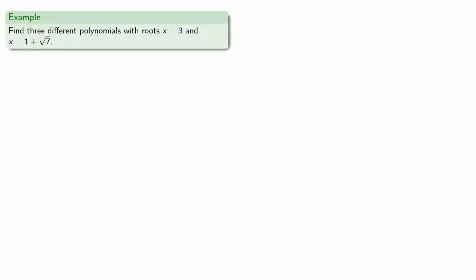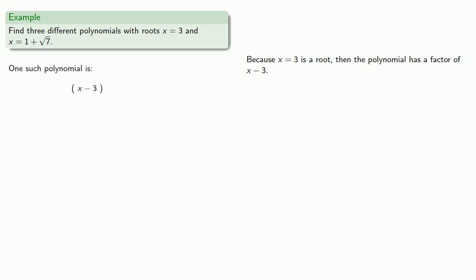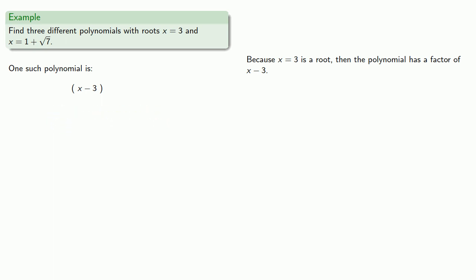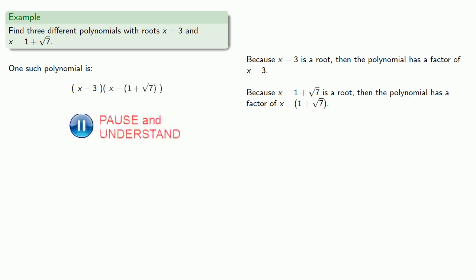For example, let's try to find three different polynomials with roots x equals 3 and x equals 1 plus square root of 7. Since x equals 3 is a root, our polynomial has a factor of x minus 3. Since x equals 1 plus square root of 7 is also a root, the polynomial has a factor of x minus (1 plus square root of 7). When we expand this polynomial, it will have roots x equals 3 and x equals 1 plus square root of 7.